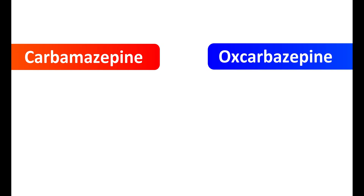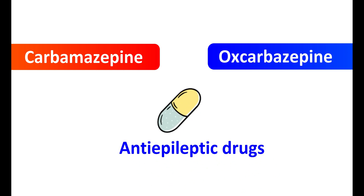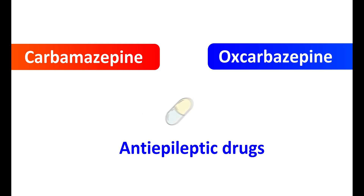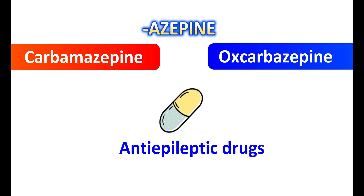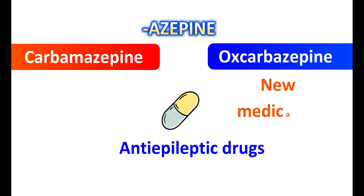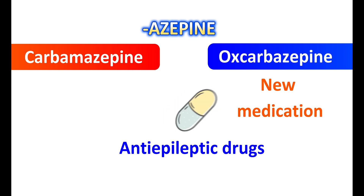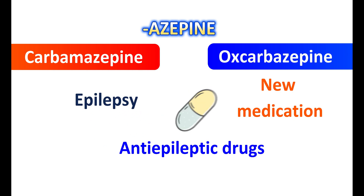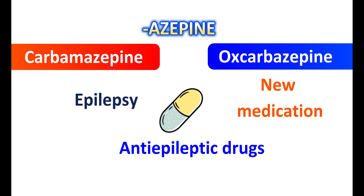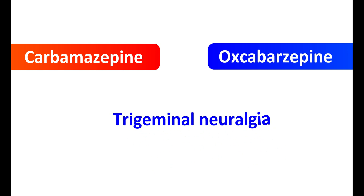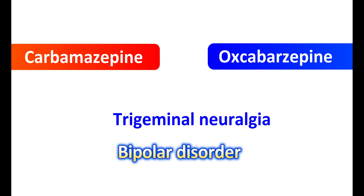Carbamazepine and oxcarbazepine are two medications that belong to anti-epileptic drugs. You can find that both of these drugs have a similar suffix '-azepine'. Chemically they are related. Oxcarbazepine is a newer medication which is related to carbamazepine. Both of these medications can be used for the treatment of epilepsy and they are classified as anticonvulsants. They can also be used in the treatment of trigeminal neuralgia and bipolar disorder.